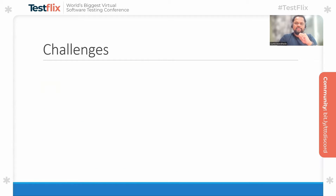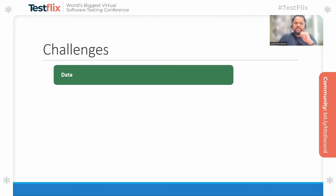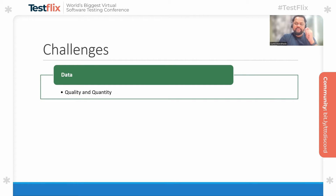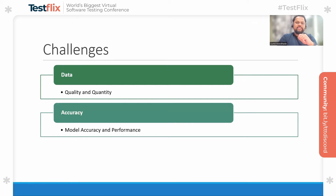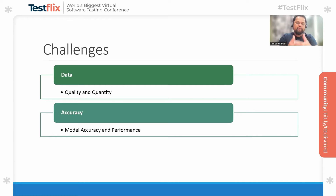Now let's try to understand some of the key challenges faced by generative AI models. Number one is data — the quantity, quality, and diversity of the data is very important to train a generative AI model, and that makes it quite challenging to have data that meets all these criteria without noise and in a structured way. Another key challenge is model accuracy and performance. Due to the complex nature of training generative AI models, it becomes quite challenging to measure accuracy and performance, as well as benchmarking.